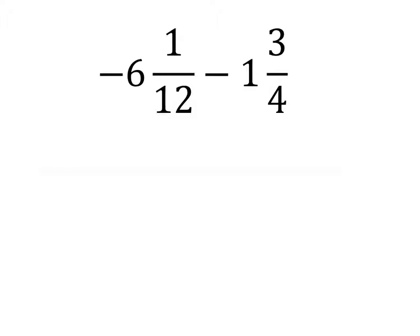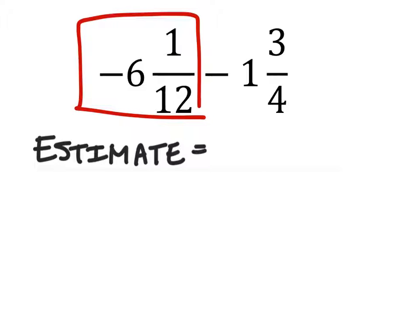We'll estimate and then we'll actually evaluate this problem. So with the estimate, we're just going to look at these two numbers. First, this negative 6 and 1/12. We would round that to about negative 6 because 1/12 is less than 1 half. So that means we're just going to round this number down to a negative 6.